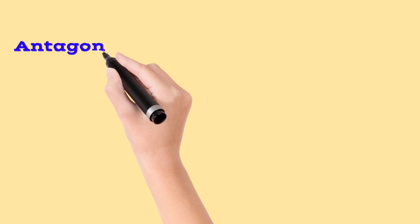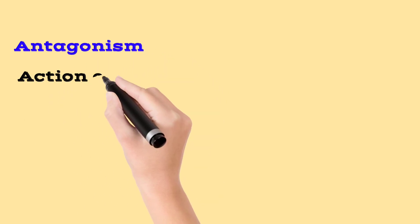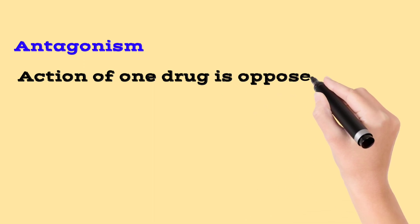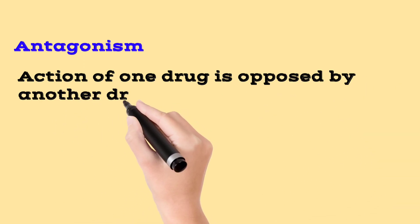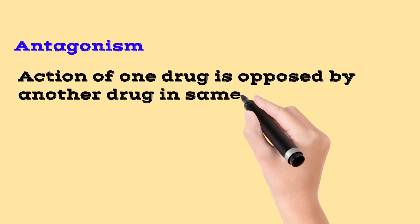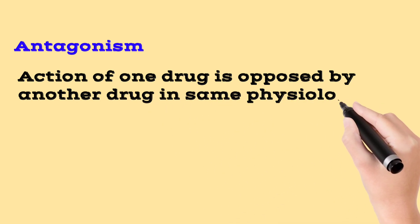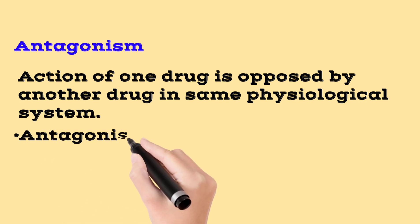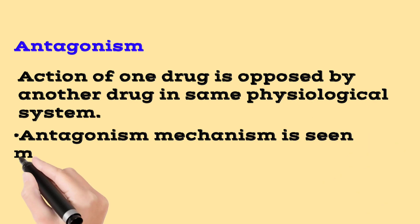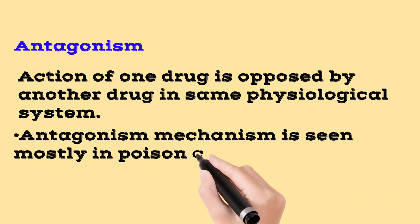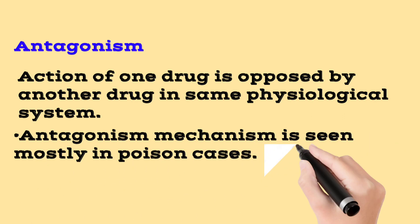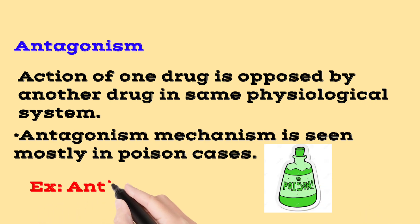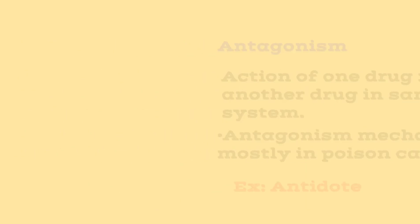Next is antagonism. Antagonism is when the action of one drug is opposed by another drug acting on the same physiological system. If a drug or poison substance is present in the body, an antidote works by the antagonism mechanism.